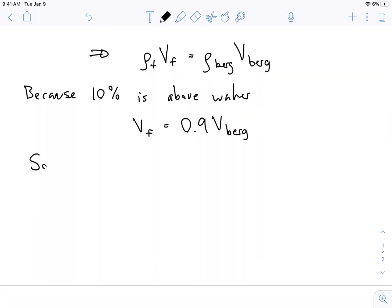So we plug that in. So we have rho-f times 0.9 times Vberg is equal to rho-berg times Vberg. And we see that the volume of the iceberg actually cancels out, right. I guess it doesn't go to zero, it just cancels out.